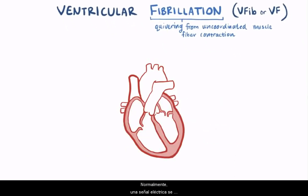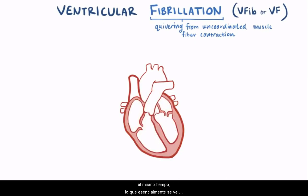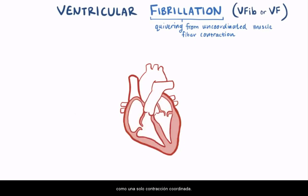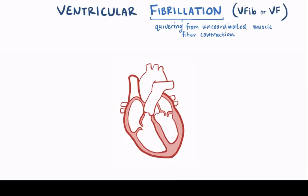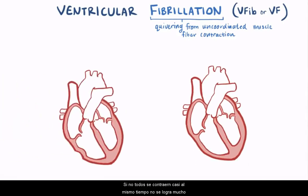Normally, an electrical signal spreads fast enough so that all the muscle fibers in the ventricles contract at almost the same time, which essentially looks like a single, coordinated contraction. If they don't all contract at about the same time, not much gets accomplished.